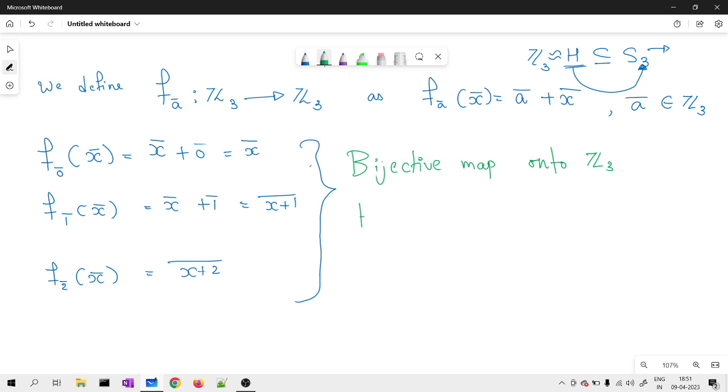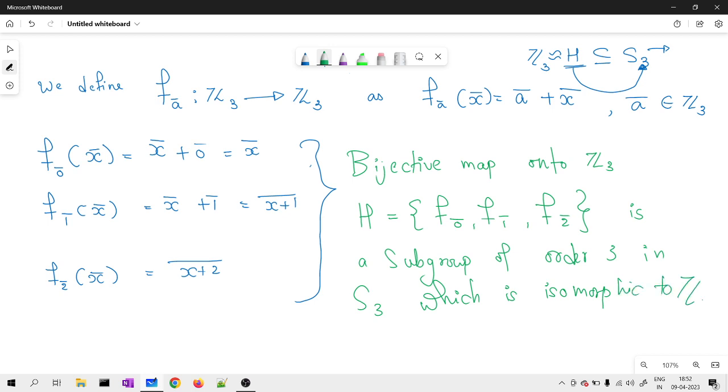And if I consider my H which is nothing but the collection of this map F of 0̄, F of 1̄, F of 2̄, then this H is a subgroup of order 3 in S3 which is isomorphic to Z3.